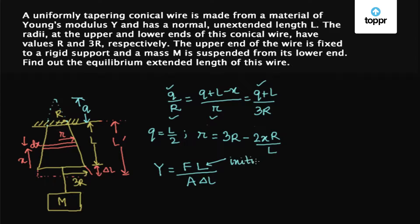Delta L is the change in length, A is the cross sectional area, and F is the force.